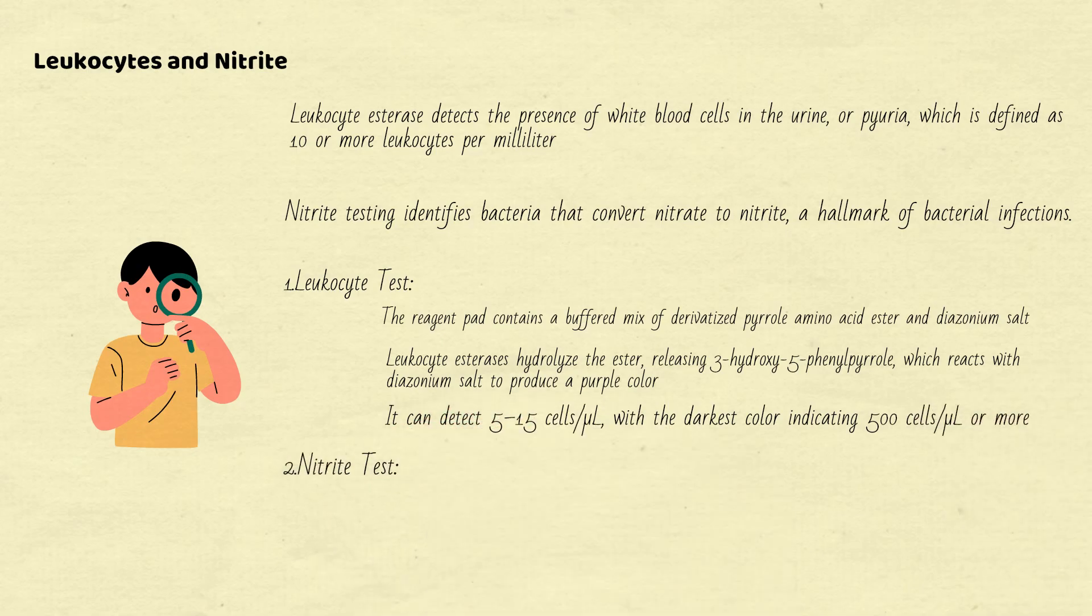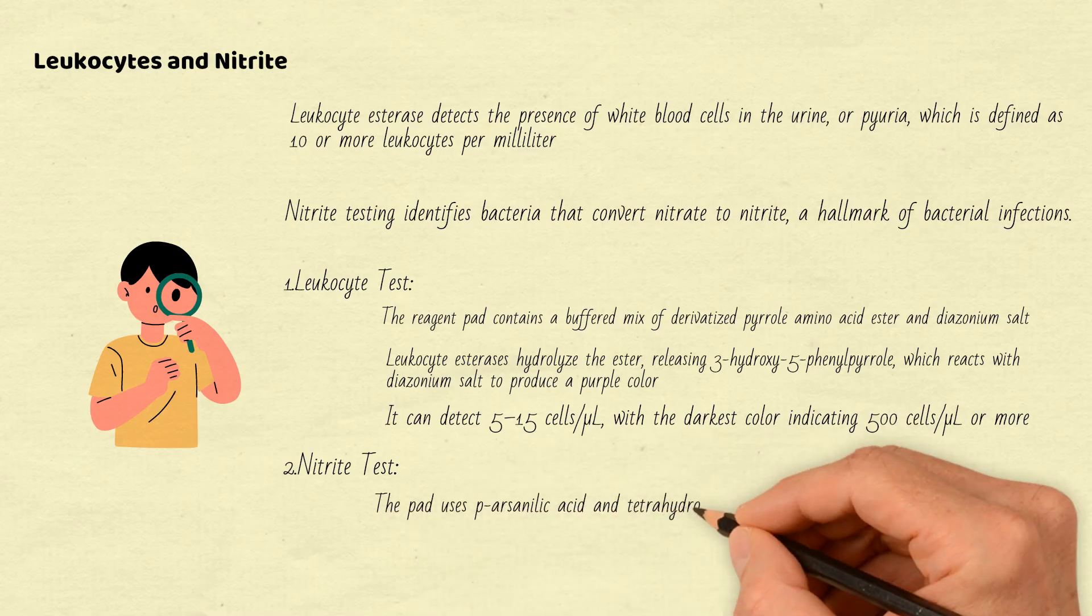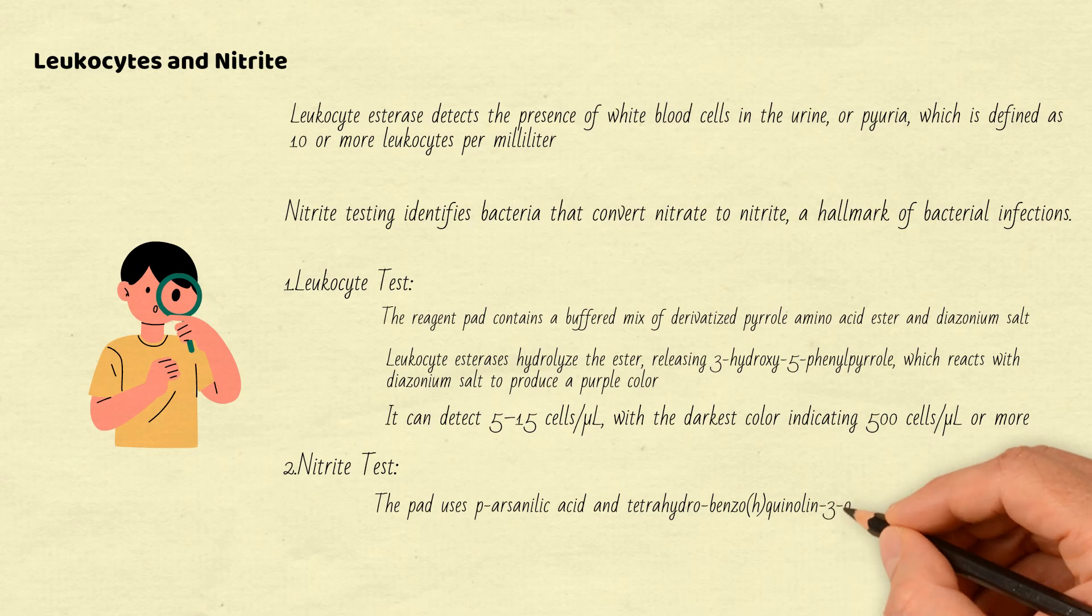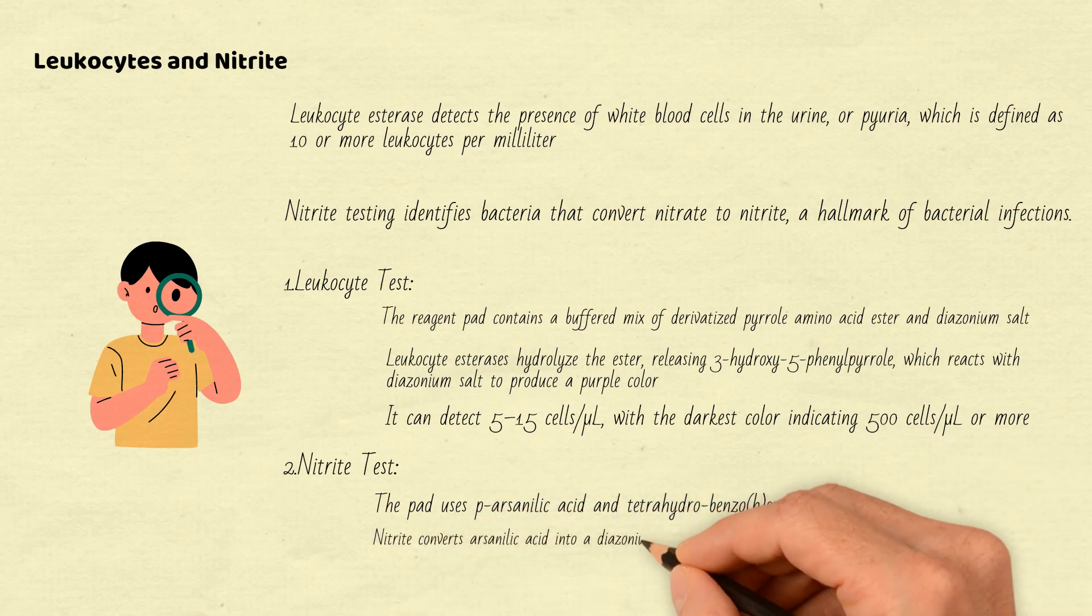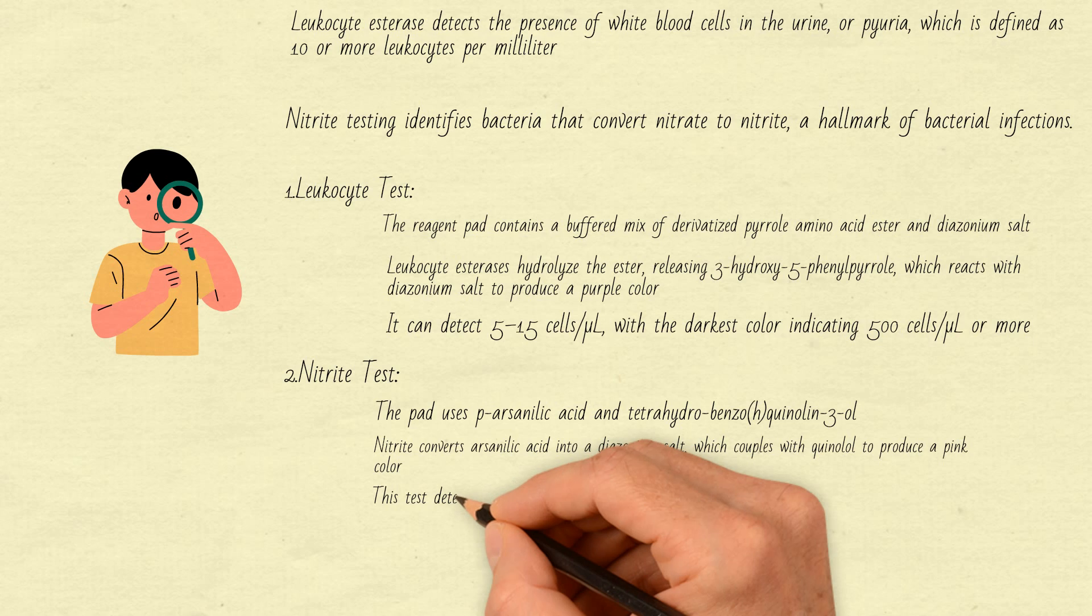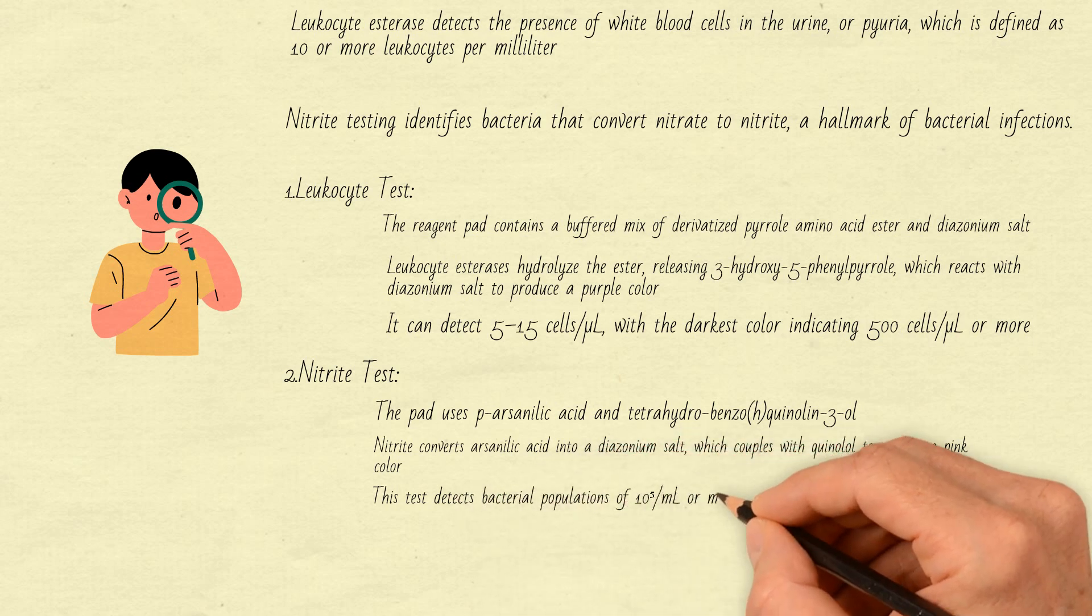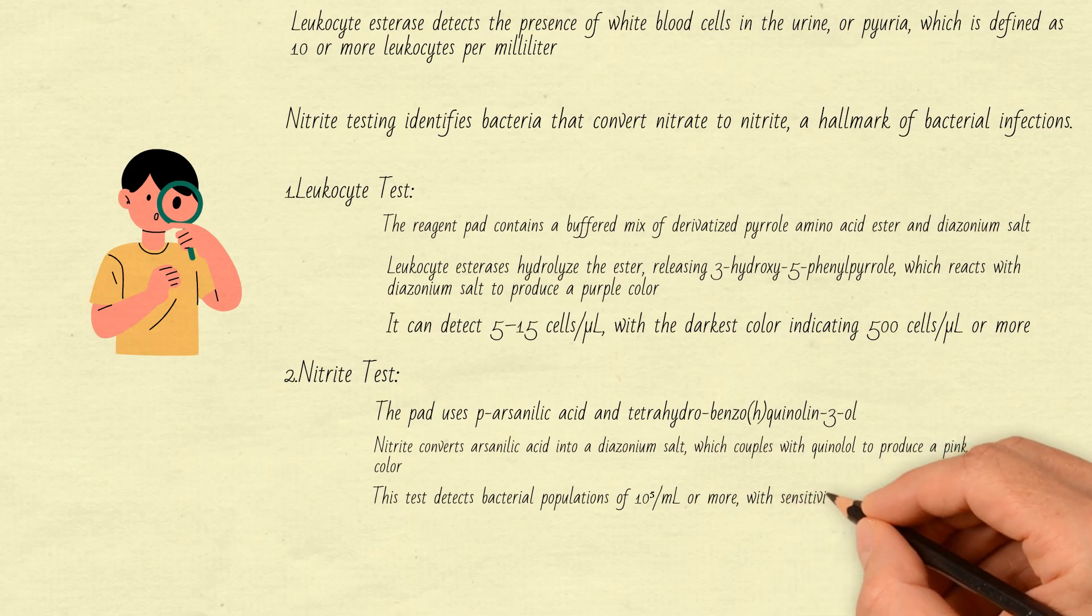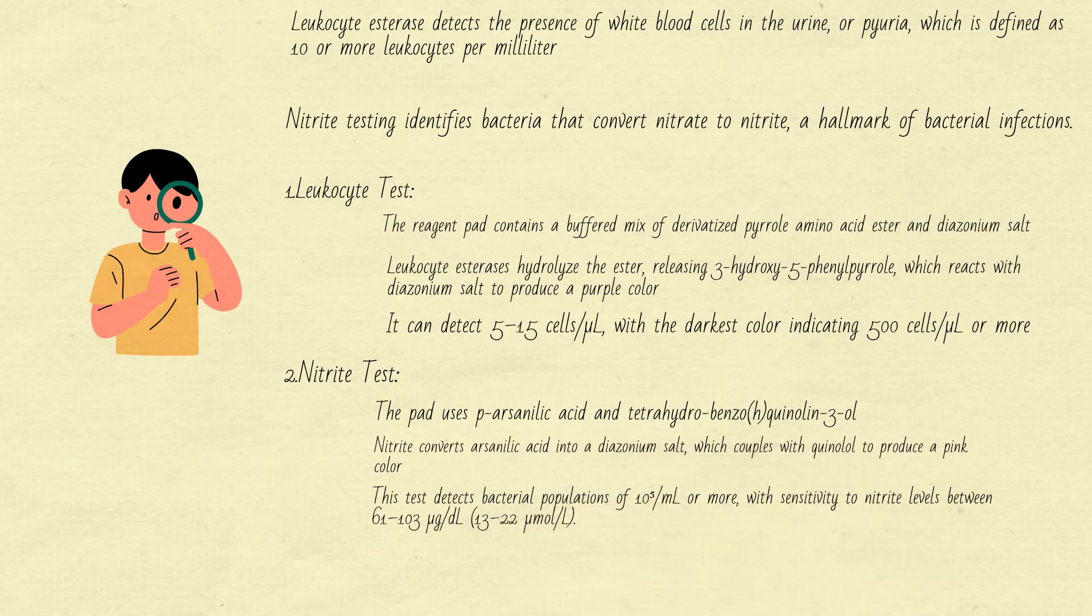2. Nitrite test. The pad uses P-arsenilic acid and tetrahydrobenzo (H-quinolin) 3-OL. Nitrite converts arsenilic acid into a diazonium salt, which couples with quinolol to produce a pink color. This test detects bacterial populations of 100,000 per milliliter or more, with sensitivity to nitrite levels between 61 to 103 micrograms per deciliter (13 to 22 micromole per liter).